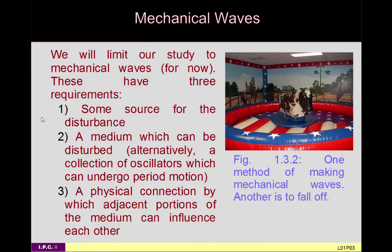We're going to have three requirements for a mechanical wave. First, you have to have some sort of a source of disturbance. For example, you can create mechanical waves in a bounce house arena by bouncing up and down — that becomes your source of waves. Alternatively, if you fall off and land somewhere, that's another source of waves.